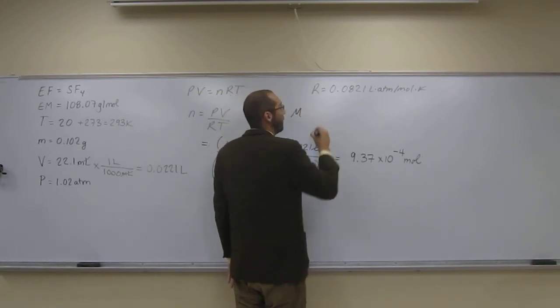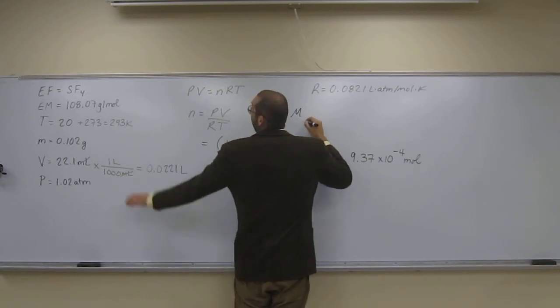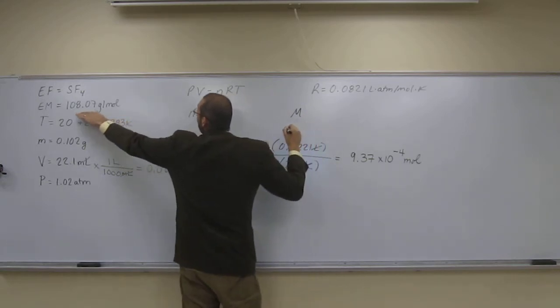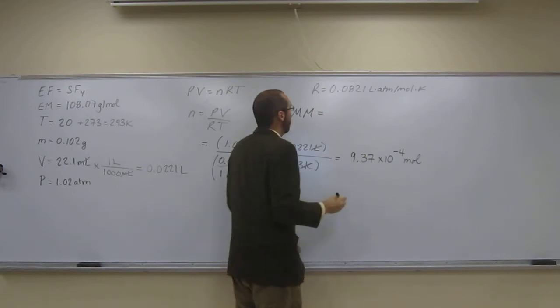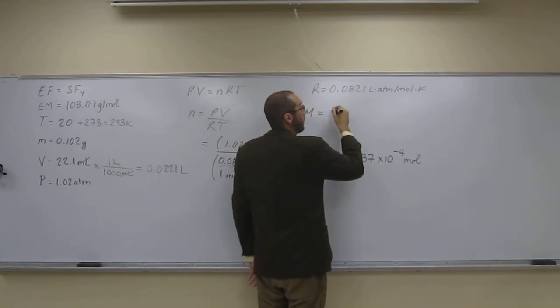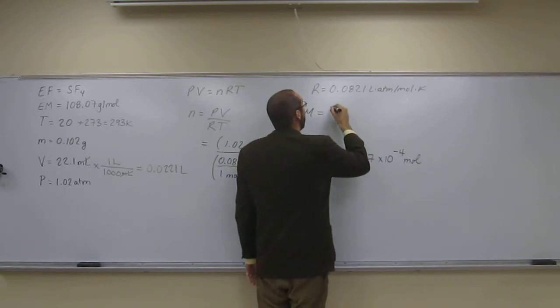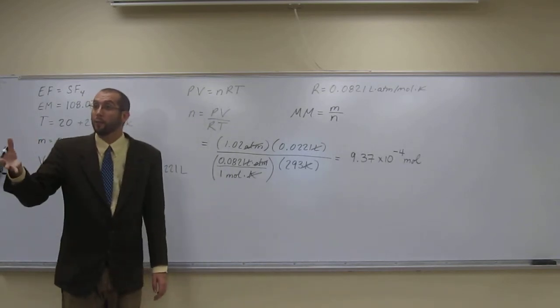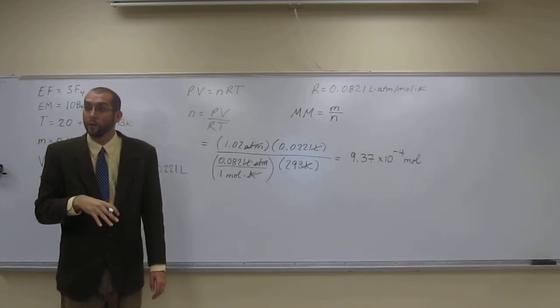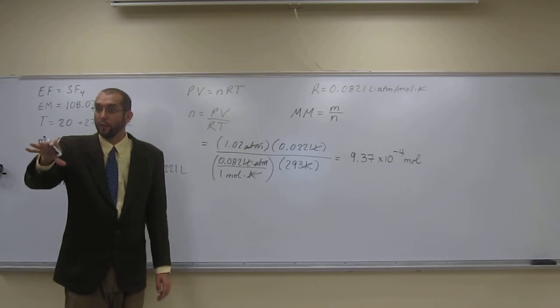So the molar mass of the gas, right? So the empirical mass is the mass of the empirical formula. The molar mass is going to be grams per mole. So, in this case, it's going to be mass divided by the number of moles. Like that, right? So that's grams per mole. Does everybody understand what I'm saying?